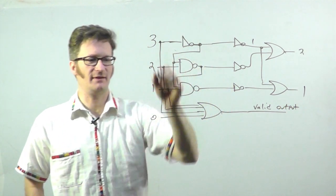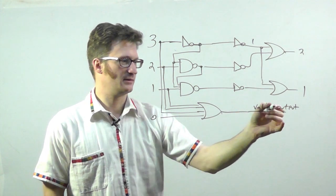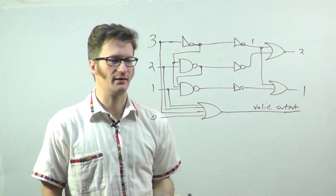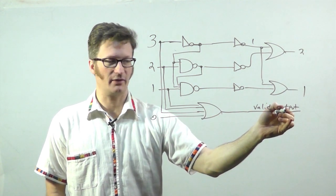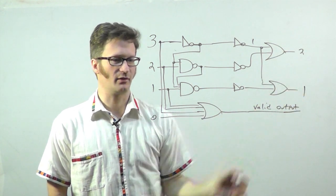So, if any of these are high, this will go high, telling me that I have valid output. So, if zero is asserted, valid output goes high, and we'll display zero over here.